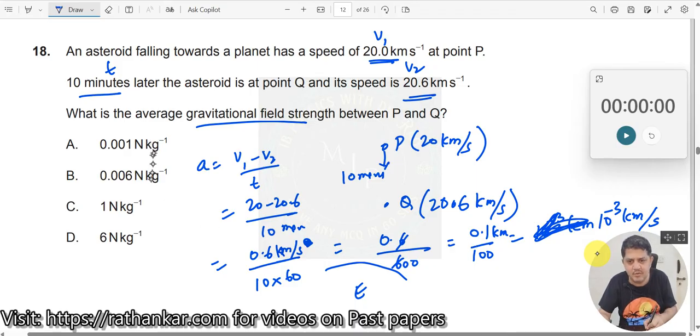But what is given here? Newton per kg. So what I need to do is, it should be in standard units. So if I do this, this will become 1 meter per second. It will be 10 cube. 10 cube into 10 to the power minus 3 will be 1, 1 meter per second squared, which is nothing but 1 Newton per kg.